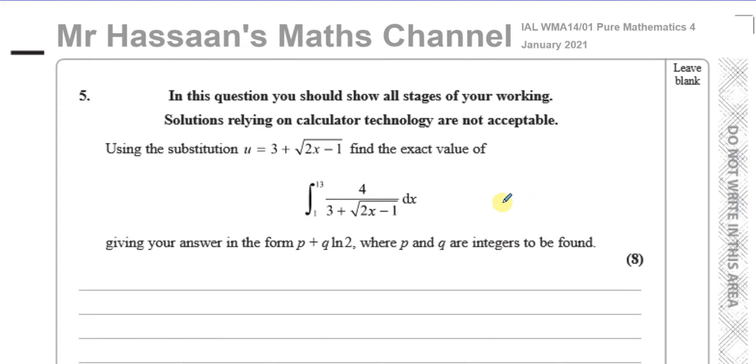It says using the substitution u equals 3 plus the square root of 2x minus 1, find the exact value of this integral between 1 and 13 of 4 over 3 plus root 2x minus 1 with respect to x, giving your answer in the form p plus q ln 2, where p and q are integers to be found.